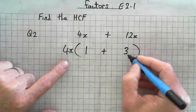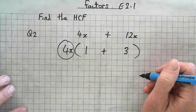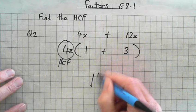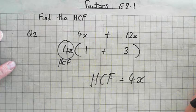Alright, so we're going to write two brackets. And what's the highest number that will divide into 4 and 12? And what can I take from both sides? Alright, so 4x times what is 4x? Times 3 is 12.